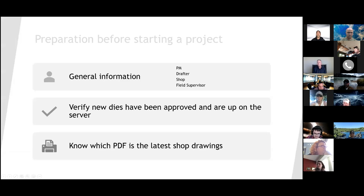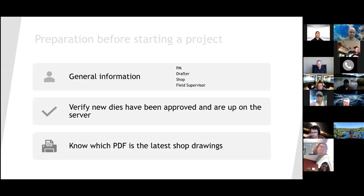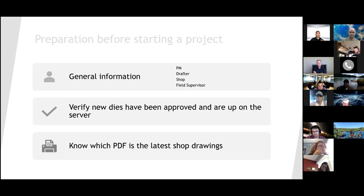Some preparation is necessary before starting a job. We like to get familiar with each job — nothing too in-depth, but at least getting familiarized with general information: who's the PM, who's the drafter, what shop it's going to be in, and what field supervisor the job falls under. We jump into this stage before metal takeoff and start looking at shop drawings and come up with questions. It's important to know who to ask — whether the PM or the shop can give a better answer — so we ask the correct question to the correct person.